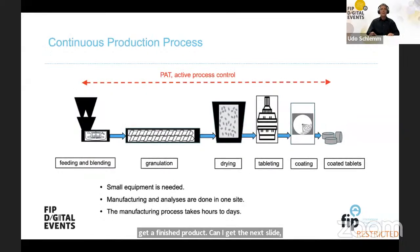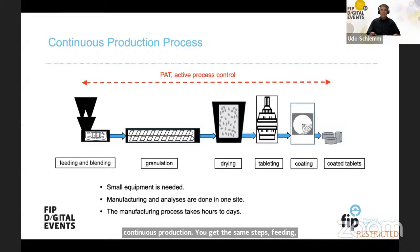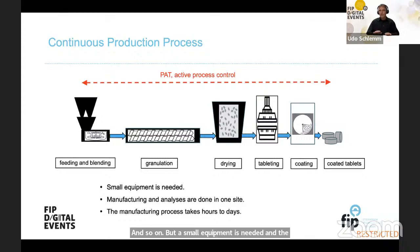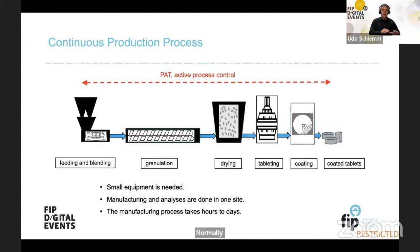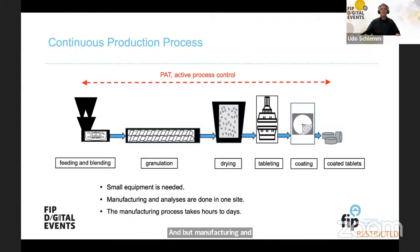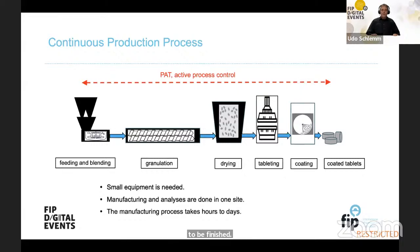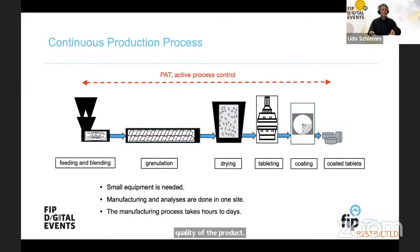In continuous production, you have the same steps — feeding, blending, granulation, drying, and so on — but small equipment is needed, and several devices can work on different principles. Much lower amounts of material are manufactured at the same time, manufacturing and analysis are done in one site, and the process takes only hours to days. In this case, it is mandatory to apply PAT technology to control the process and the quality of the product.